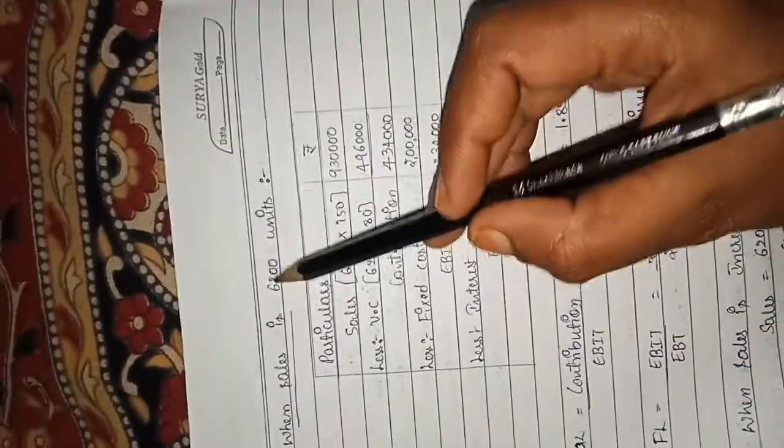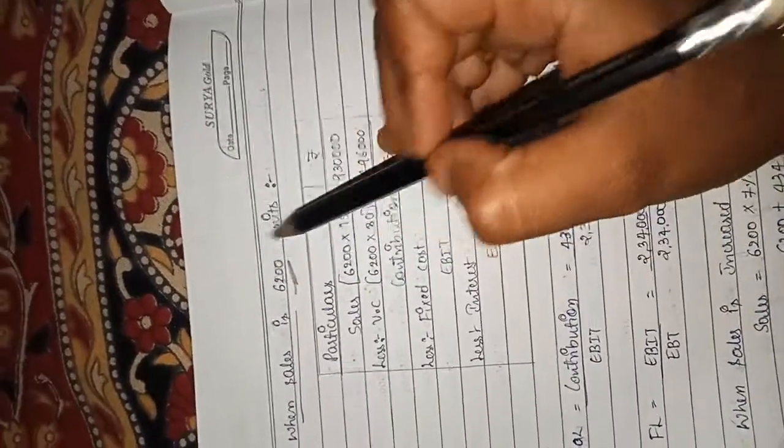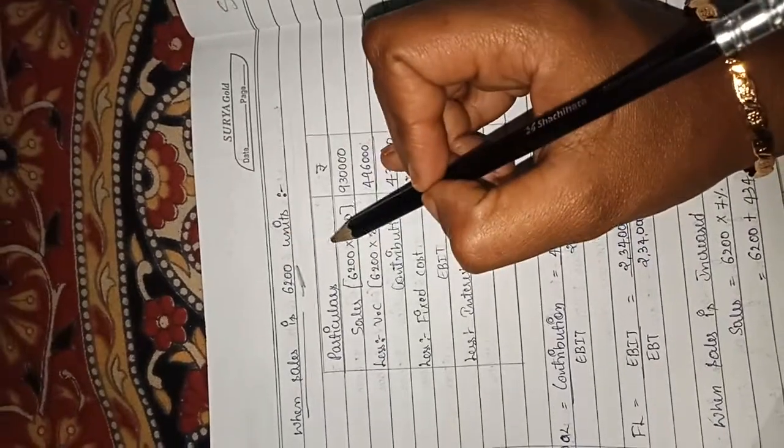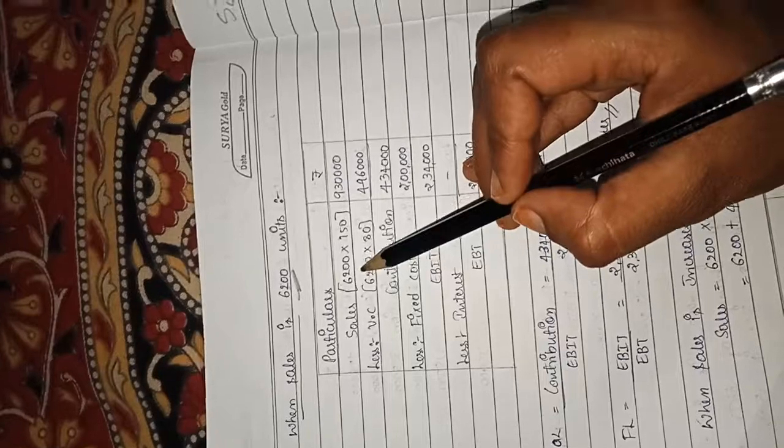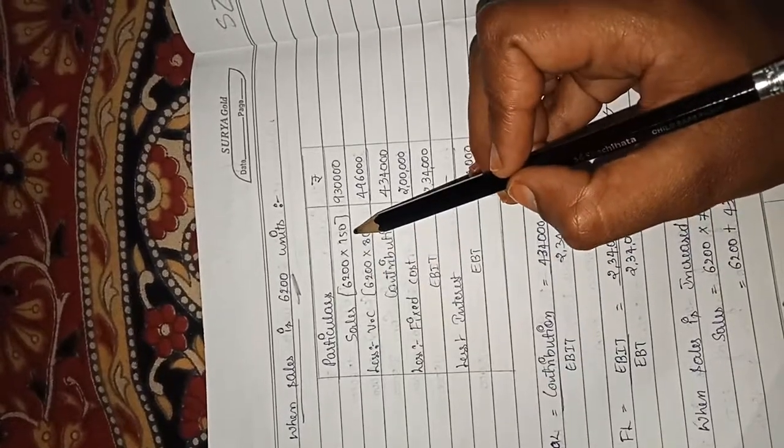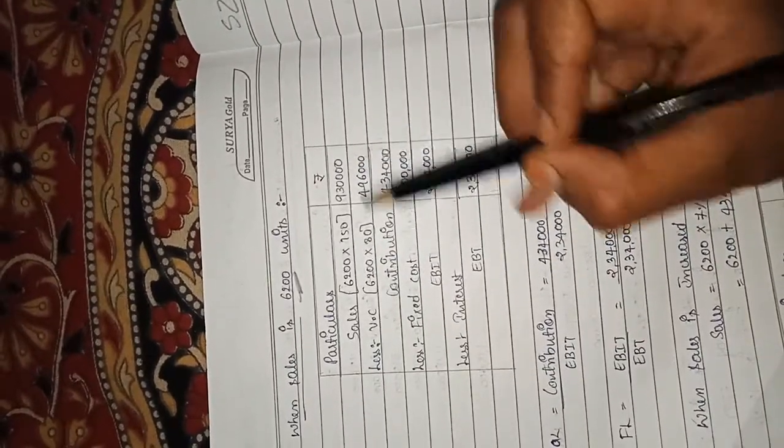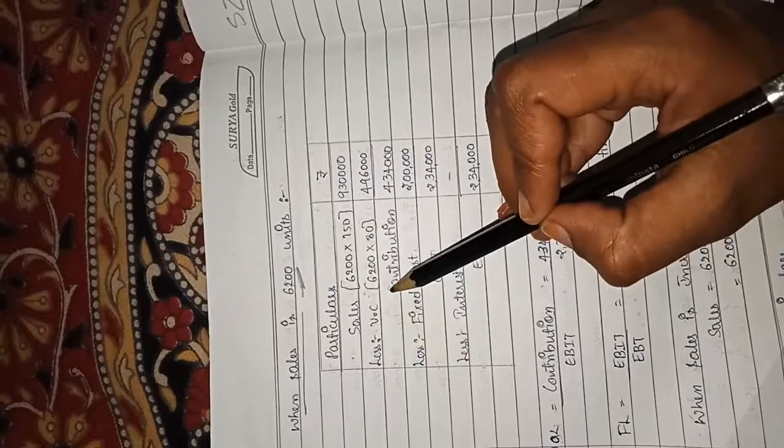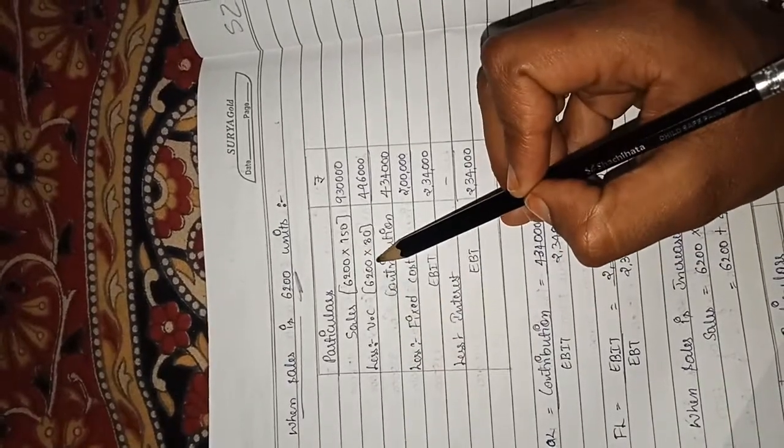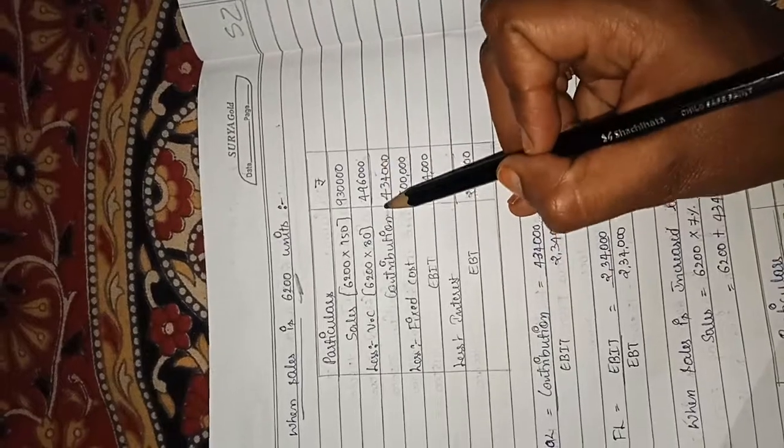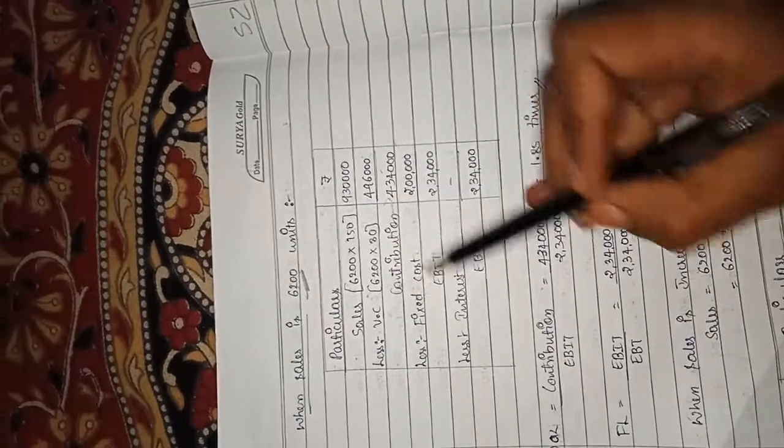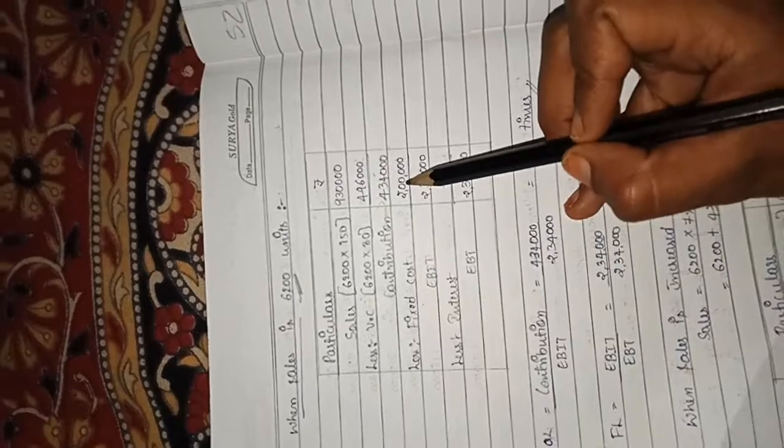Now come to the calculation of leverages. When the sales is 6,200 units, we calculate operating and financial leverage. Sales: 6,200 into 150 per unit equals 9,30,000. Deduct variable cost: 6,200 into 80 equals 4,96,000. We get contribution 4,34,000. Deduct fixed cost 2 lakhs.